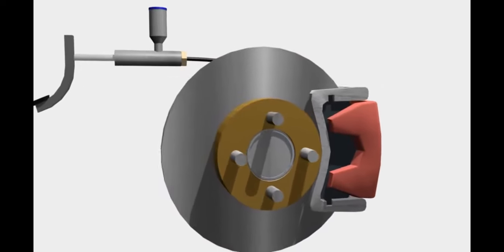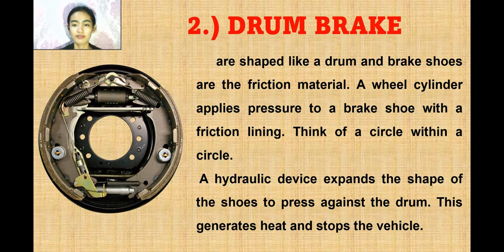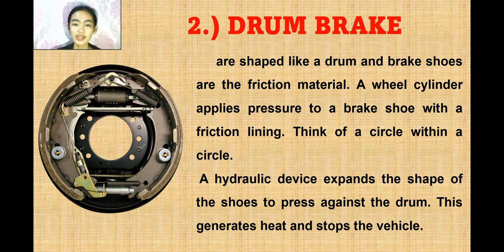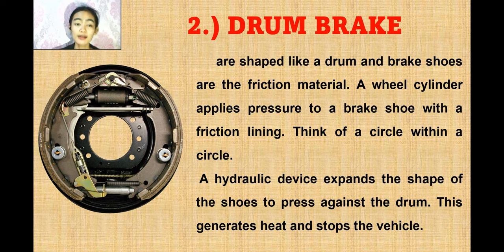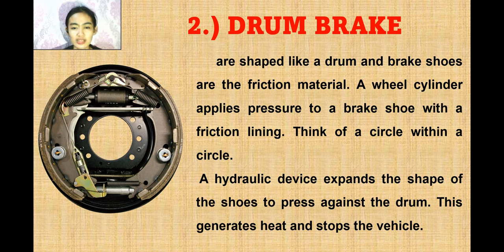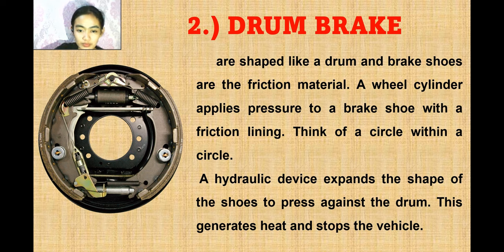Number two is the drum brake. Drum brakes are shaped like a drum, and brake shoes are the friction material. In the disc brake, the friction material is brake pads; in the drum brake, it is brake shoes. A wheel cylinder applies pressure to the brake shoe with a friction lining. A hydraulic device expands the shoes to press against the drum, which generates heat and stops the vehicle.